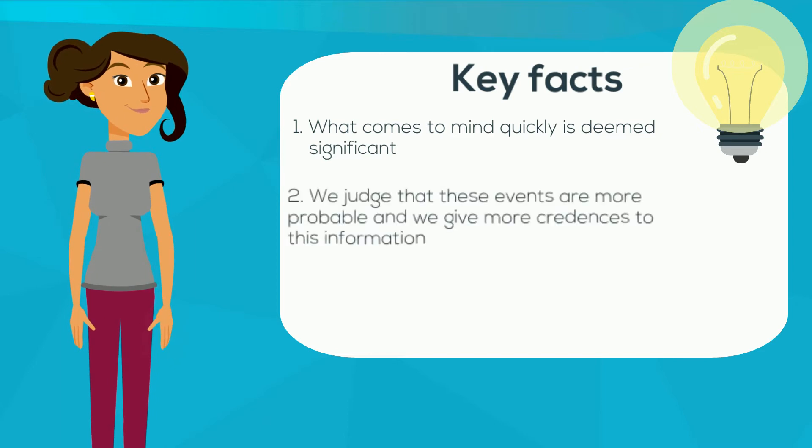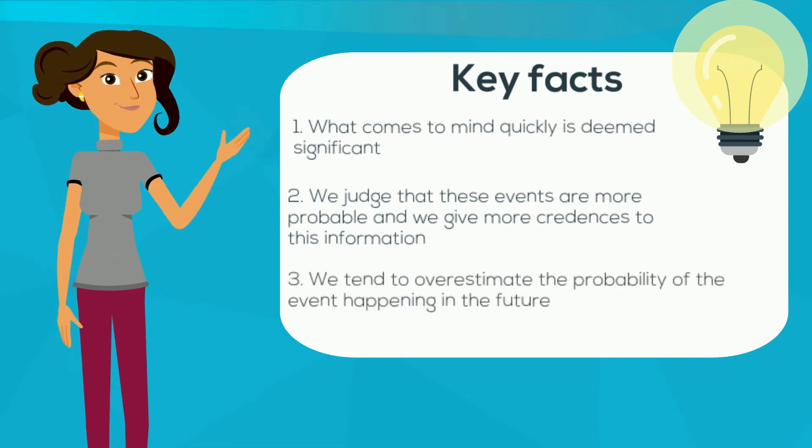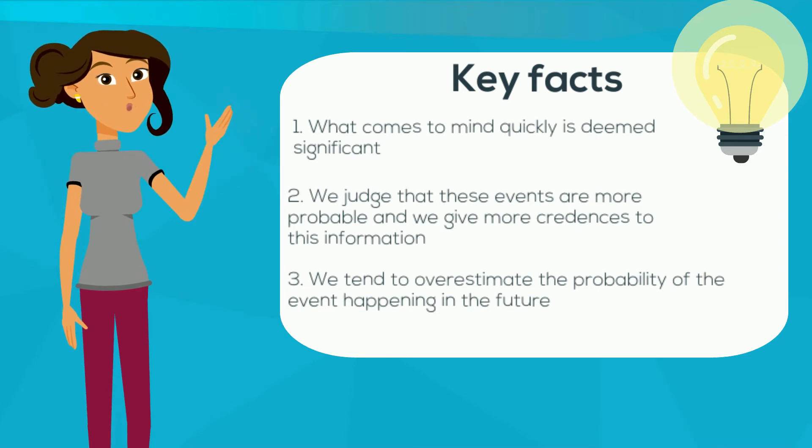Second, we judge that these events are more probable and we give more credence to this information. As a result, and thirdly, we then tend to overestimate the probability of it happening in the future.